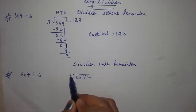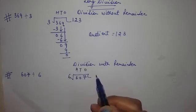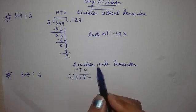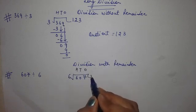607 divided by 6. Again this is 1, 10s and 100s. First of all we will divide the digits at the 100s place. So 6 divided by 6 equals to 1. So write 1 here.